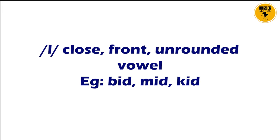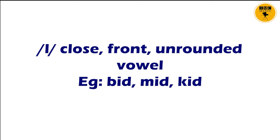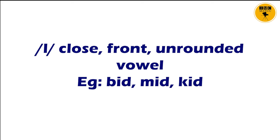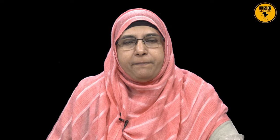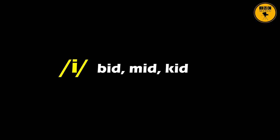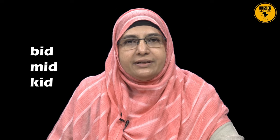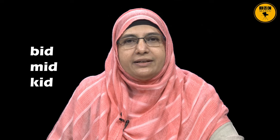Cardinal vowel number 1, as you see on your screen — examples are 'bid', 'mid', 'kid'. Pay attention to the vowel sound represented by the letter 'I' in these words. Here, the height of the tongue is close, the part of the tongue raised is front, and the lips are unrounded.